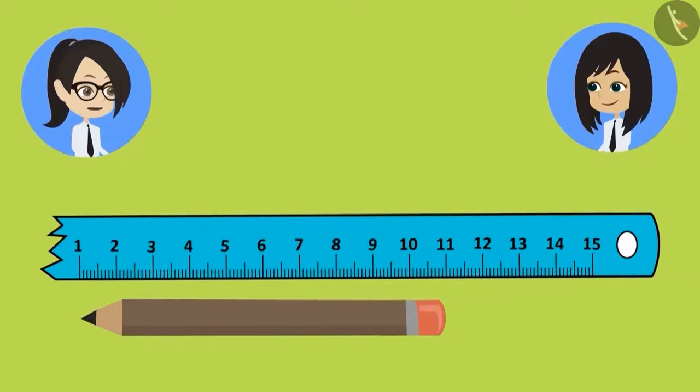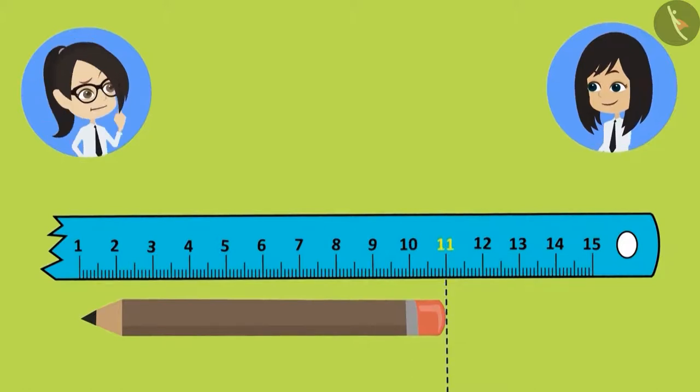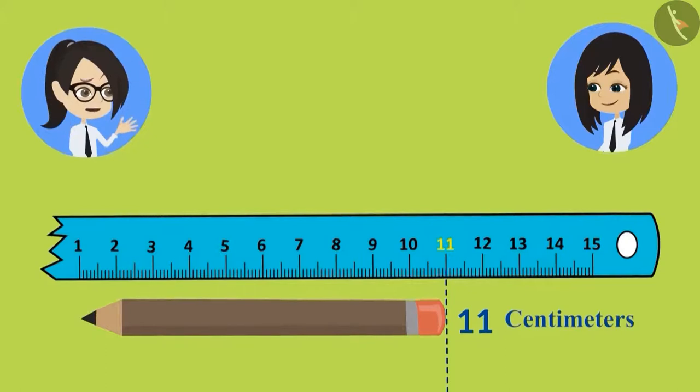Let us try and measure the pencil with this broken scale. We start counting from the least centimeter mark: 1, 2, 3, 4, 5, 6, 7, 8, 9, 10 and 11. Why is the pencil measuring 11 centimeters? We just measured it. It was 10 centimeters then.